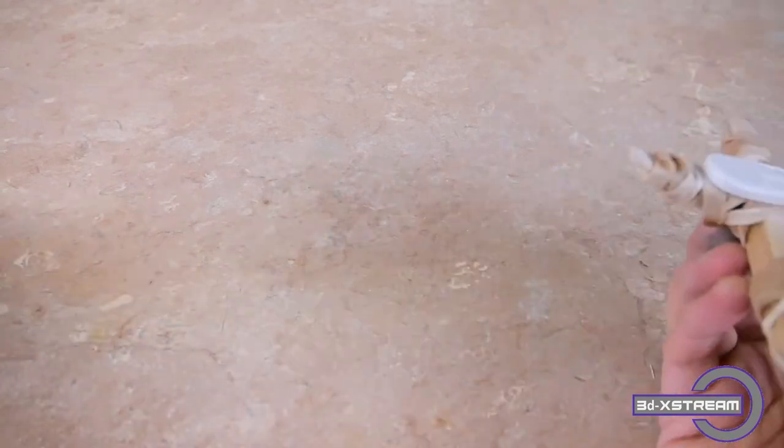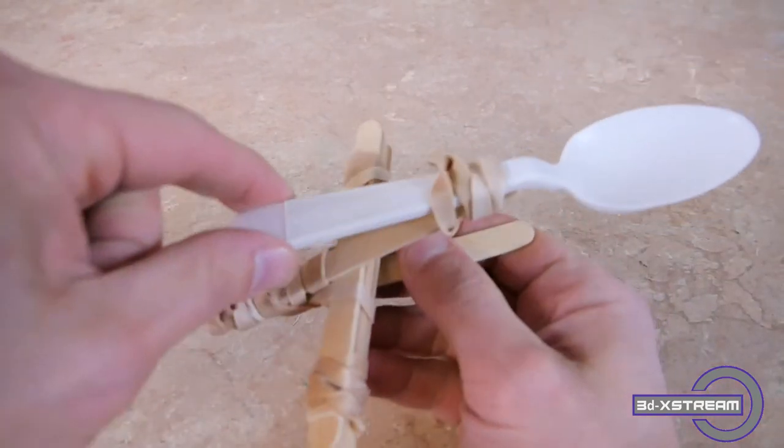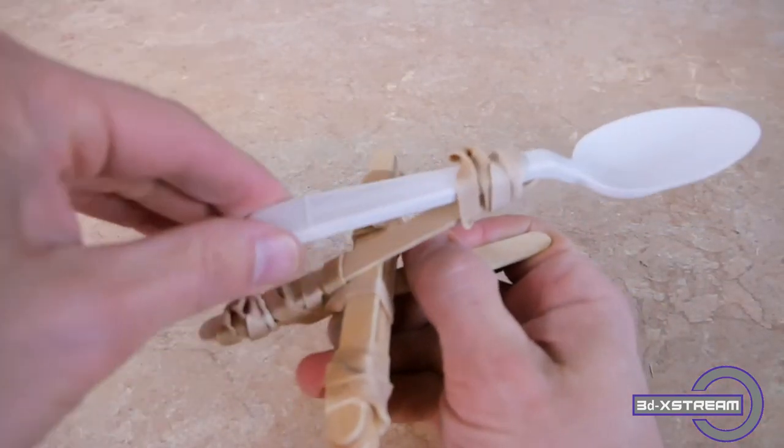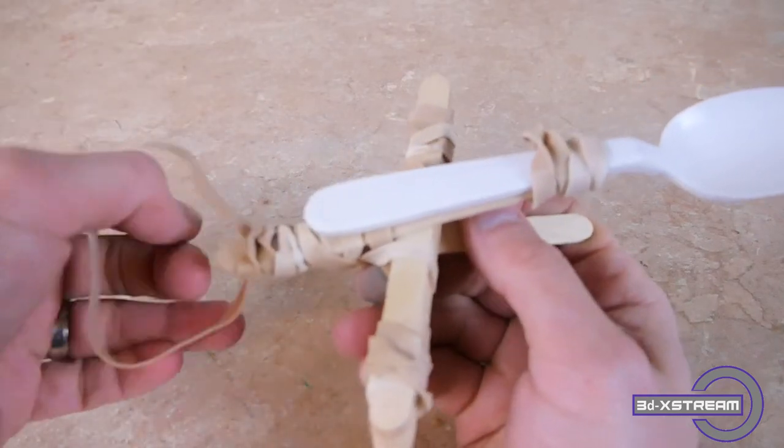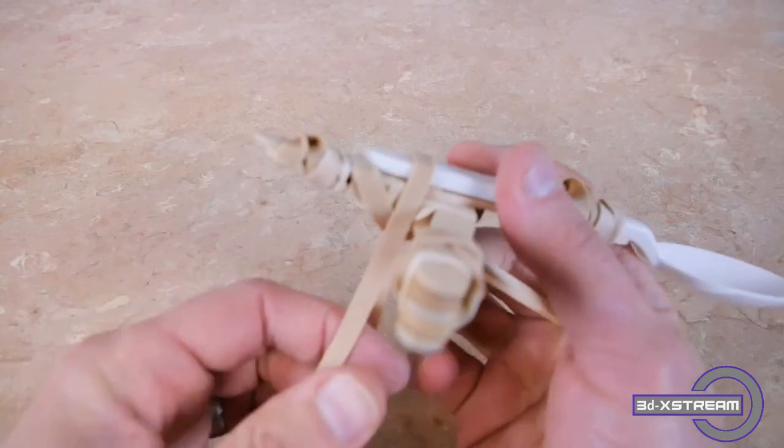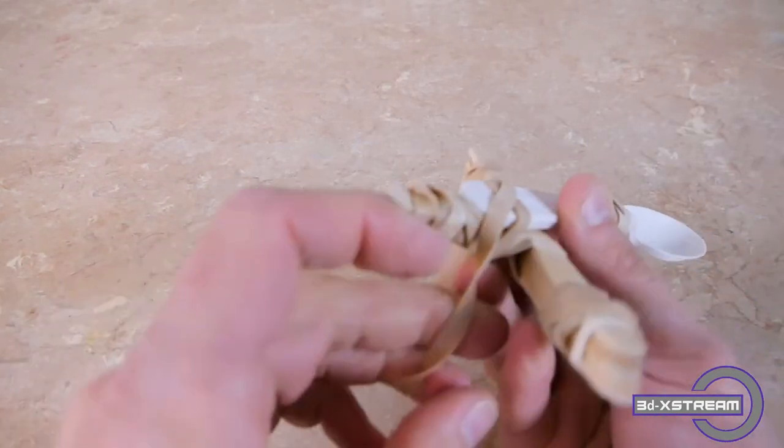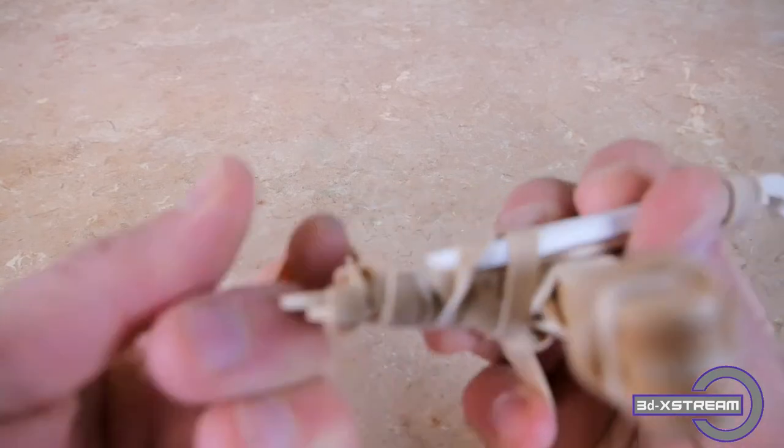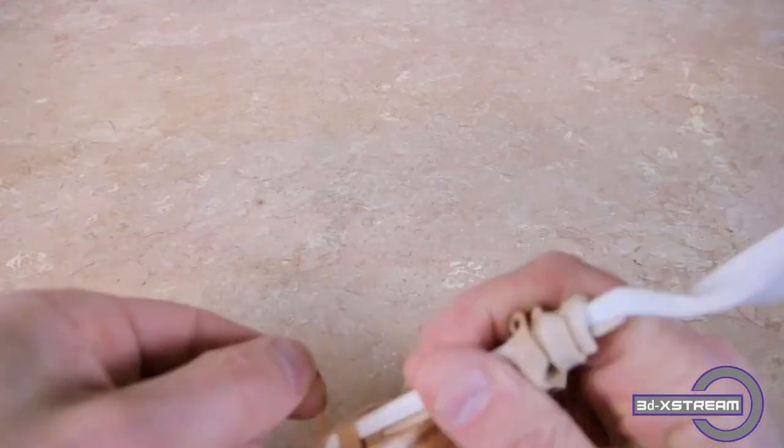We also are going to have to secure it here on the bottom. Let's put another rubber band here. You can do this any way which works best for you. As long as you can get this rubber band around the bottom of the spoon and the frame as tight as you can get it.